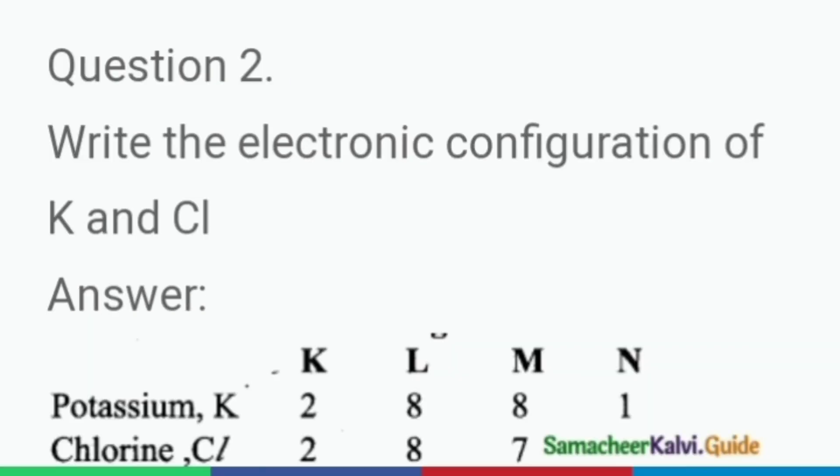Question number 2. Write the electronic configuration of K and Cl. Answer. Potassium, K. Chlorine, Cl. K, L, M, N. 2, 8, 8, 1. 2, 8, 7.